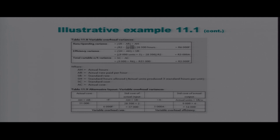That gives us a variance of R6,000, which is favorable. It is favorable because we budgeted R2 per hour for variable overheads but actually spent R1.79 per hour. For the variable overhead efficiency variance, the formula is: standard hours minus actual hours, multiplied by the standard rate.